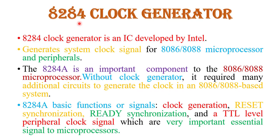First, I introduce the 8284 clock generator. The 8284 clock generator is basically an IC developed by Intel Corporation. It generates a clock signal for the 8086 or 8088 microprocessor and other peripheral devices. It is an important component of the 8086 or 8088 microprocessor because it generates clock signals for both microprocessors.